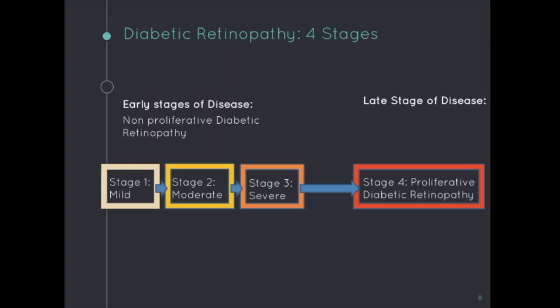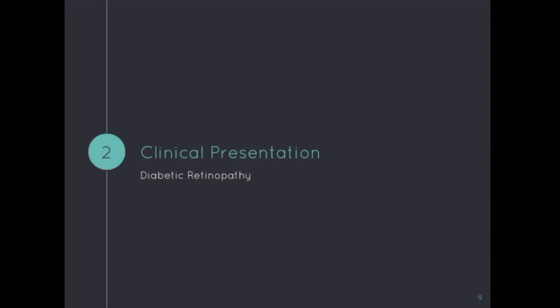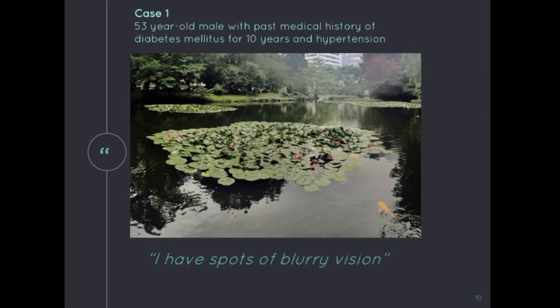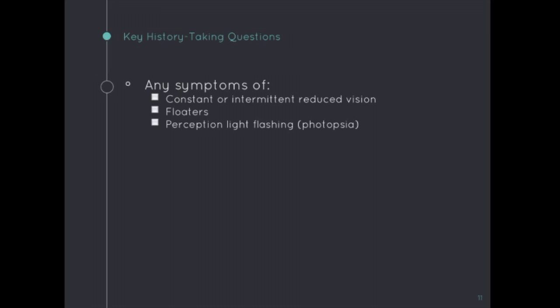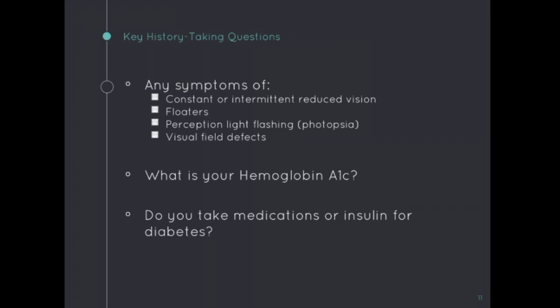Let's go through two brief cases to demonstrate the clinical presentation of the two types of diabetic retinopathy. In case 1, we have a 53-year-old man with a past medical history of DM for 10 years and hypertension, who presents with spots of blurry vision. When taking this patient's history, it is important to ask about symptoms of constant or intermittent reduced vision, floaters, photopsia, or visual field defects, as well as their hemoglobin A1C level, current diabetes medications and adherence, and whether their blood pressure is under control.